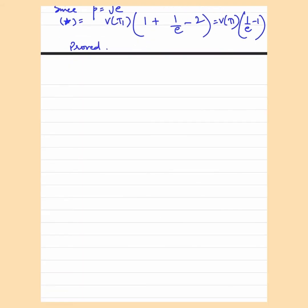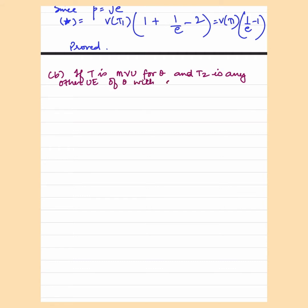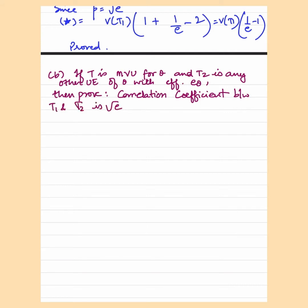So easy. Talking about part B, if T1 is a minimum variance unbiased estimator for theta and T2 is any other unbiased estimator of theta with efficiency E theta, then the correlation coefficient between T1 and T2 is under root of E theta. I am not aiming to solve questions which are already given as examples — you can find this example in Fundamentals of Mathematical Statistics by S.C. Gupta and B.K. Kapoor. So let's move on to a very interesting question.